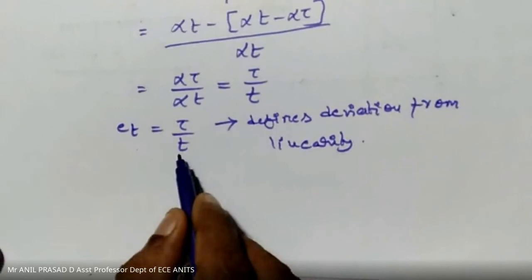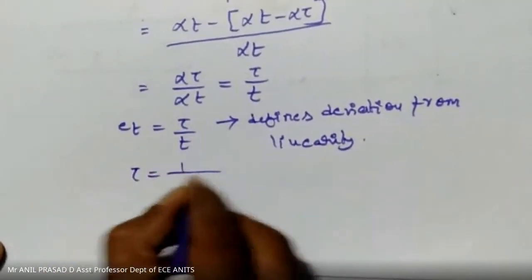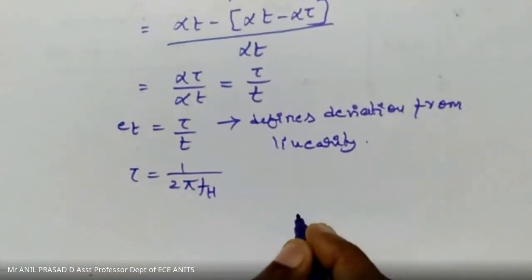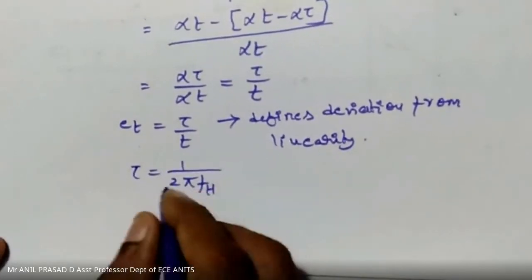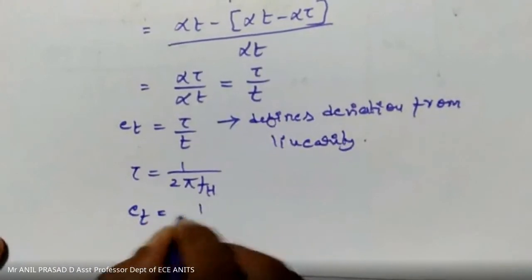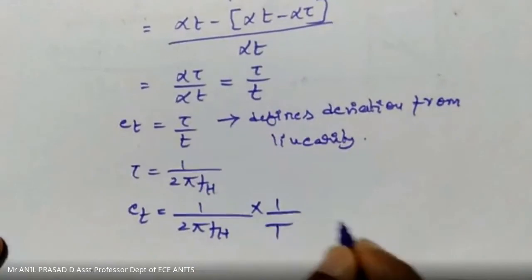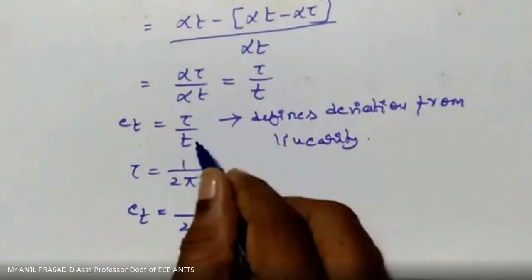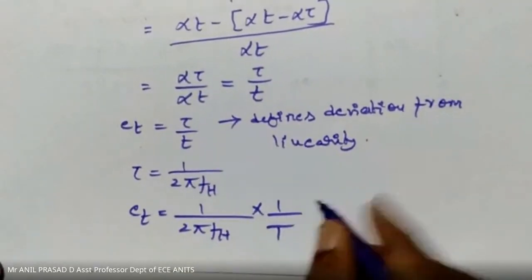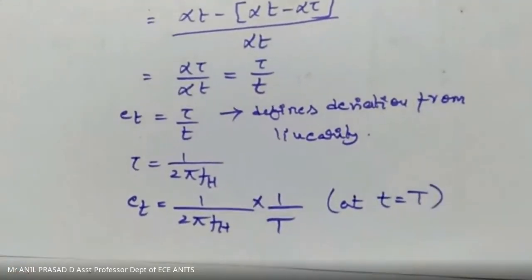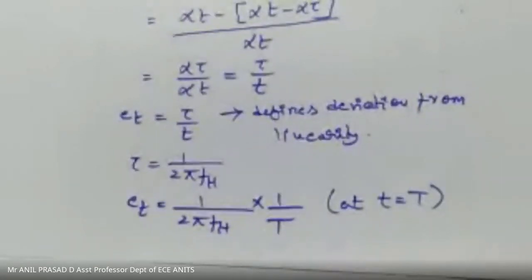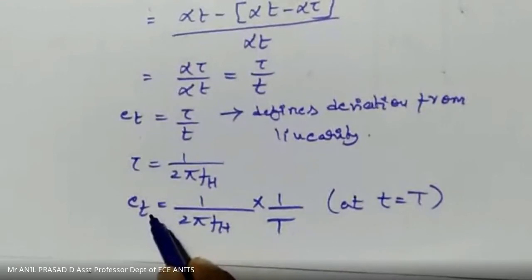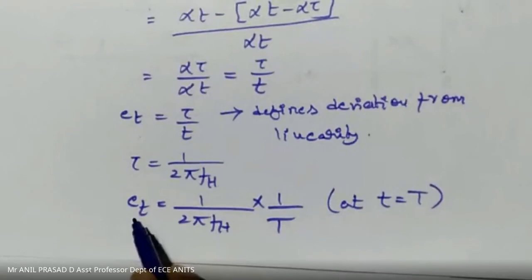At t equals capital T, the transmission error is e_T equals τ/T. Since τ equals 1/(2π*f_H) where f_H is the upper cutoff frequency (1/(2πRC)), the transmission error becomes 1/(2π*f_H*T). The larger capital T is, the smaller the transmission error — meaning longer ramp duration results in better fidelity.